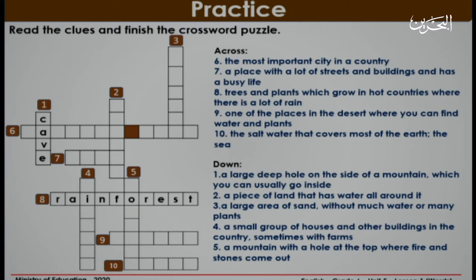Now let's look at number eight — across. Trees and plants which grow in hot countries where there is a lot of rain. The answer is rainforest. It goes from left to right. You have eight minutes. You can write your answers on your mini board. Start.